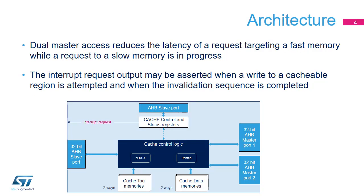Dual master access is a feature used to decouple the traffic according to targeted memory. For example, iCache assigns fast traffic — i.e., addressing flash and SRAM memories — to the AHB master 1 port, and slow traffic — i.e., addressing external memories sitting on OctoSPI and FMC interfaces — to the AHB master 2 port, thus preventing processor stalls on line refills from external memories. This allows interrupt service routine fetching on internal flash memory to take place in parallel with a cache line refill from external memory.